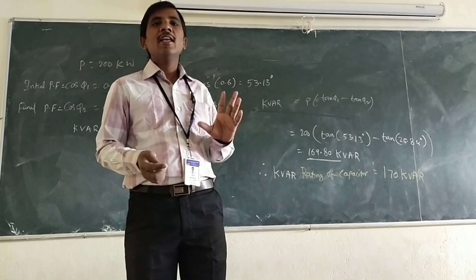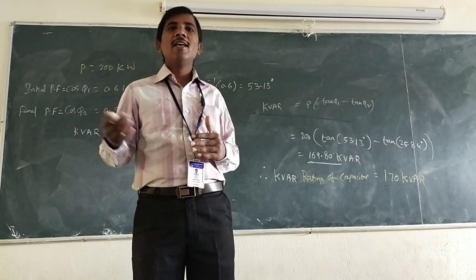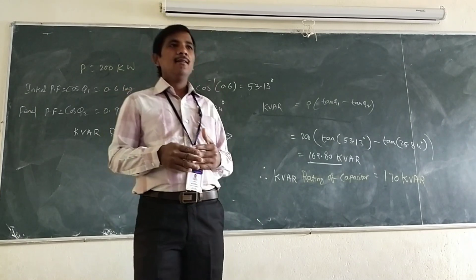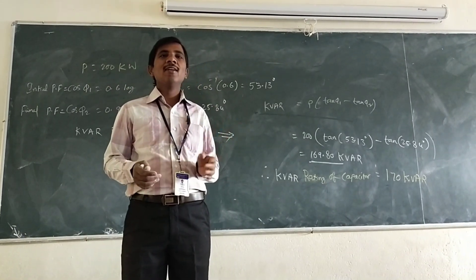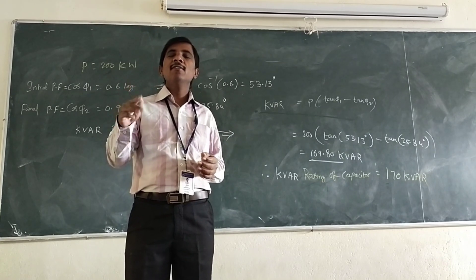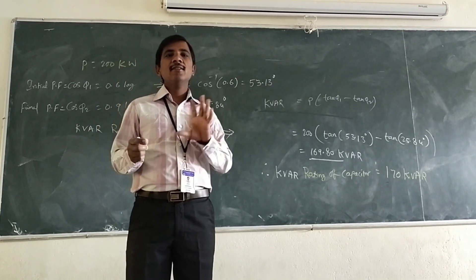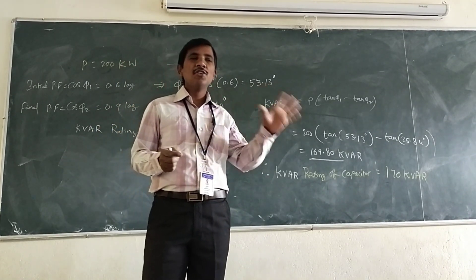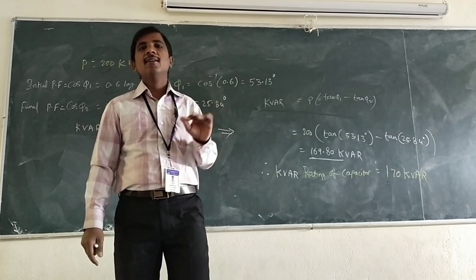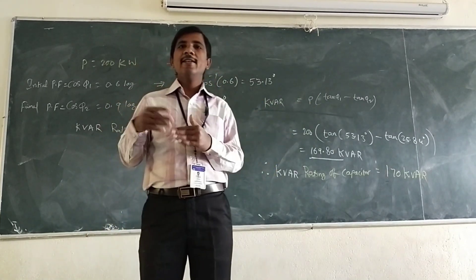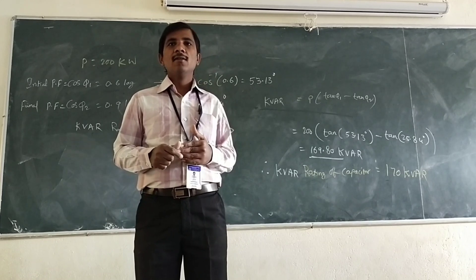A 3-phase induction motor can be connected in star as well as delta. Similarly, the capacitor banks for power factor correction may be connected in 3-phase star as well as delta. If you connect the capacitors in star, what is the rating of each capacitor? If you connect the capacitors in delta, what is the kV rating of each capacitor?